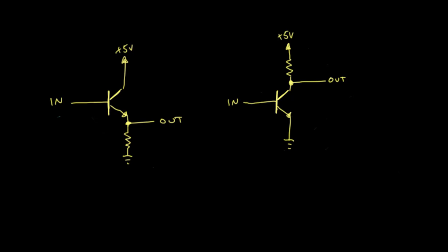I've got two transistor circuits drawn out here that should look fairly similar. These are similar to what we've already been exploring, but I want to think of them in a little bit different way. Each of these has kind of an input and an output, and I want to think of these inputs and outputs in terms of voltage.